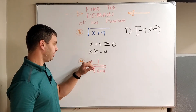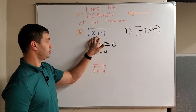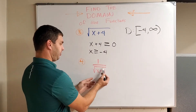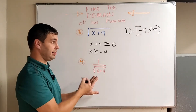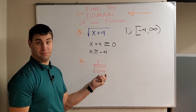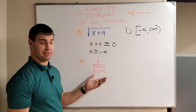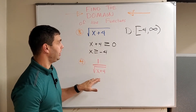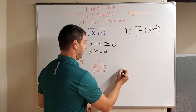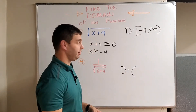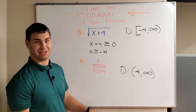Example four is a combination of the last couple: we take one and divide it by the square root of (x + 4). We know the inside cannot be negative, so the domain is at least from negative four including negative four all the way to infinity. But I also cannot divide by zero. When x equals negative four, negative four plus four is zero, the square root of zero is zero, and we'd be dividing one by zero. So instead of including negative four, I use parentheses — not including negative four — still going to infinity. Every one of those x values will work in this function.